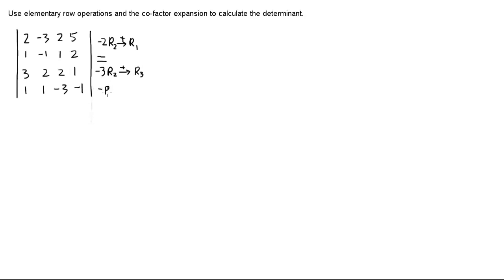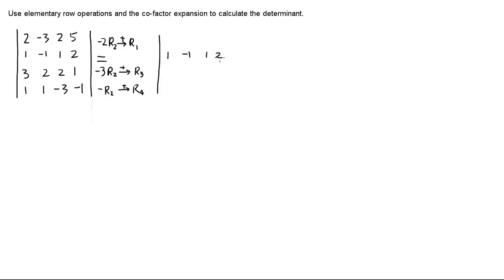The last operation is easier — just use row four and subtract row two, so negative R2 added to R4. That means the only row that's not changing is row number two: negative one, one, and two.